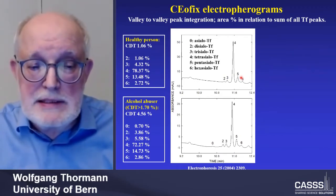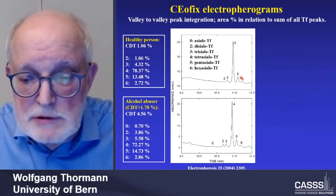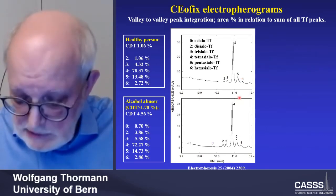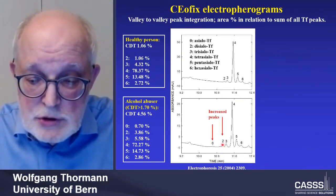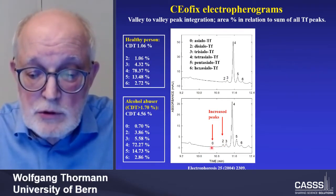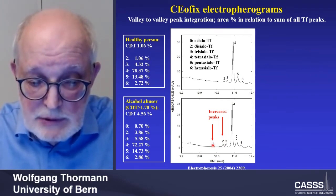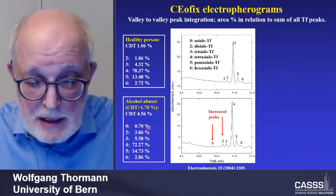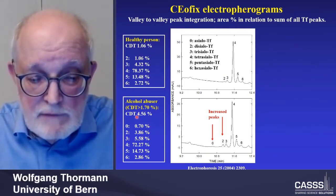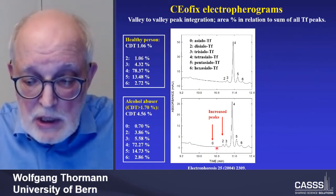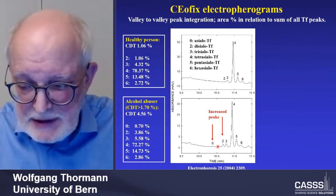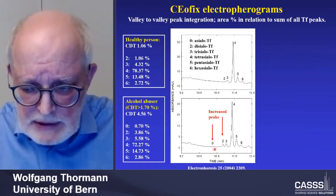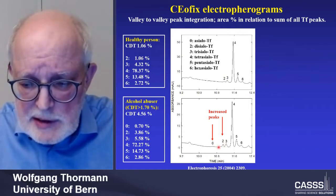If you analyze the serum of an alcohol abuser, you get a different picture. The di-sialo transferrin peak becomes larger and you may also see an asialo transferrin peak. In this case, the asialo result and di-sialo result sum to 4.56% CDT. Mono-sialotransferrin is very rarely seen in alcohol abusers — only at very high peak levels does it start to evolve.